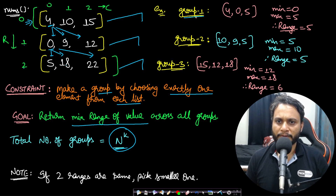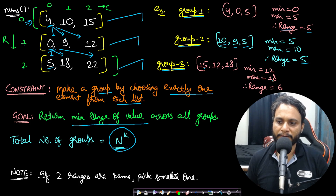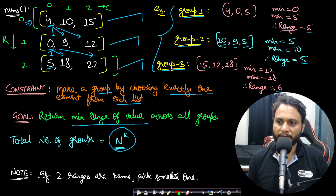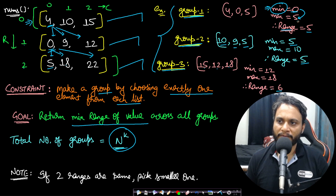For example, if one group is [4, 0, 5], the minimum value is 0 and the maximum value is 5, so the range is 5. For group [10, 9, 5], the min is 5, max is 10, range is 5. For group [15, 12, 18], the min is 12, max is 18, range is 6. Out of these, groups 1 and 2 both give the minimum range of 5. When ranges are equal, we pick the one with the lower min value. Since 0 is less than 5, the answer is [0, 5].